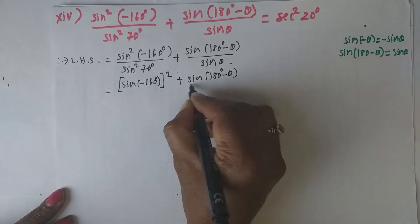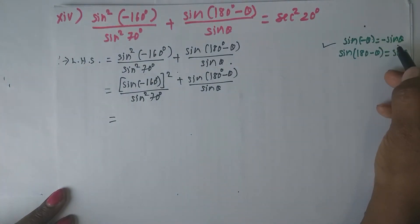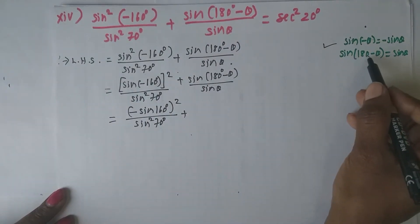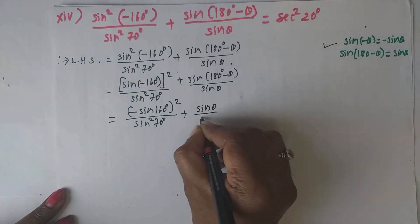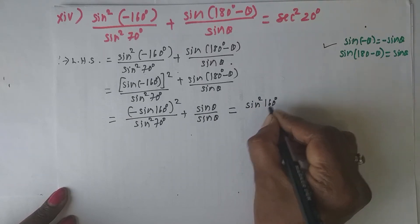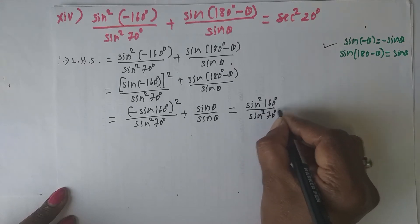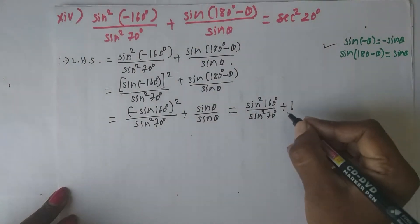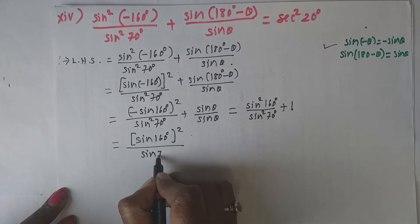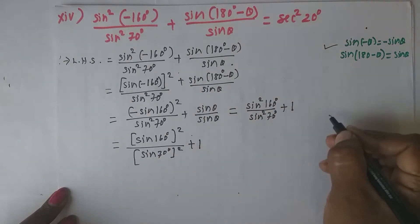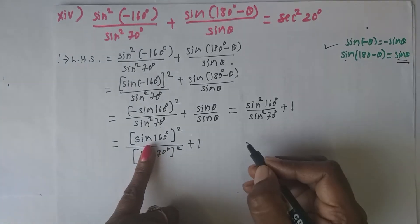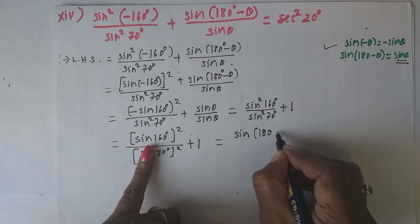Substituting: 2(2cos²2x - 1) + 1 = 4cos²2x - 2 + 1 = 4cos²2x - 1, all divided by (2cosx + 1). This is (2cos2x)² - 1², a difference of squares, giving factors (2cos2x - 1)(2cos2x + 1) divided by (2cosx + 1).